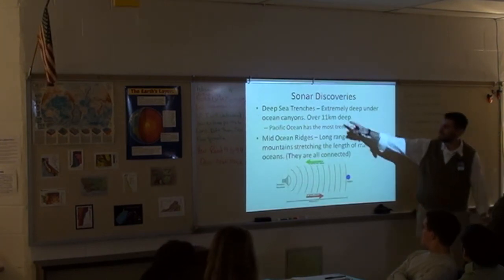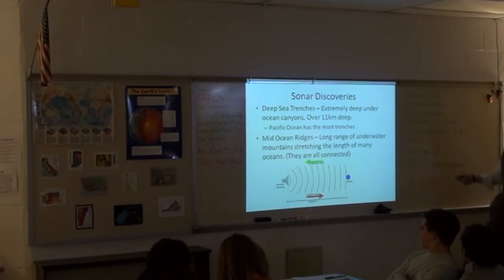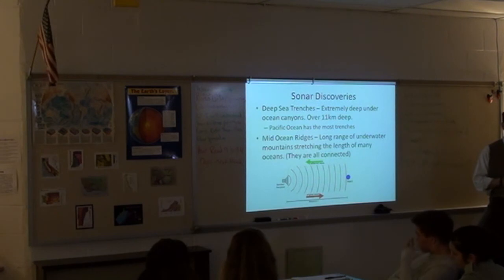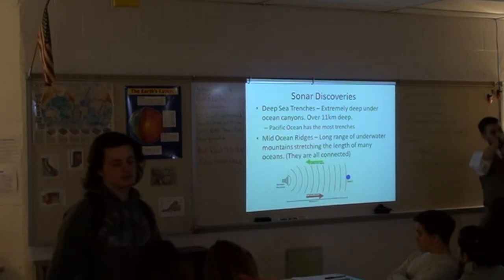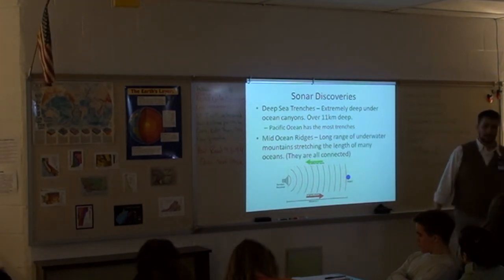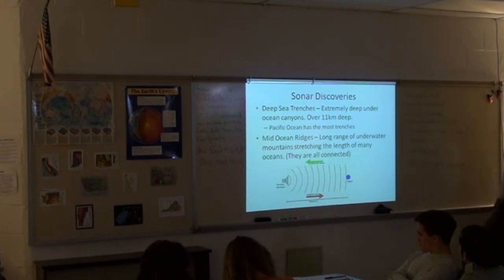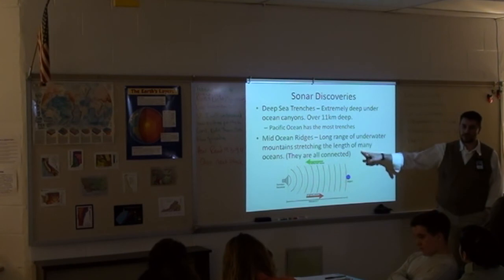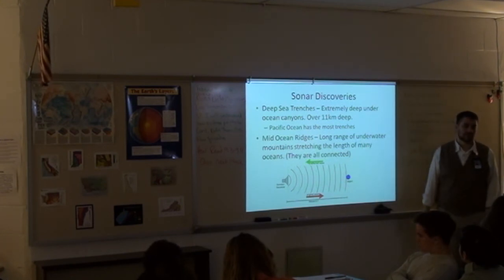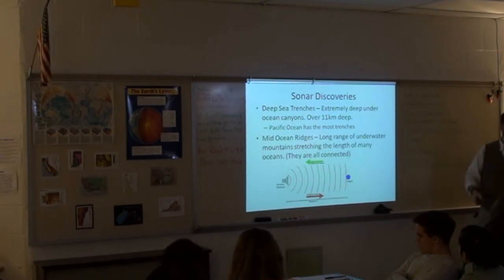They found deep sea trenches and mid-ocean ridges. A deep sea trench is an extremely deep ocean canyon or gorge — at the bottom you're talking 11 kilometers deep. A 10k is about 6.2 miles, so this is 6 to 7 miles deep underwater — seriously deep. The Marianas Trench is 11 kilometers deep. Most trenches are found in the Pacific. In the Atlantic Ocean, they found something really cool called the Mid-Ocean Ridge — a giant line of mountains running from the North Atlantic all the way to the South Atlantic, splitting the Atlantic like a giant zipper.